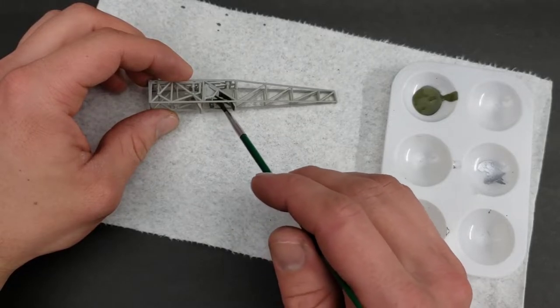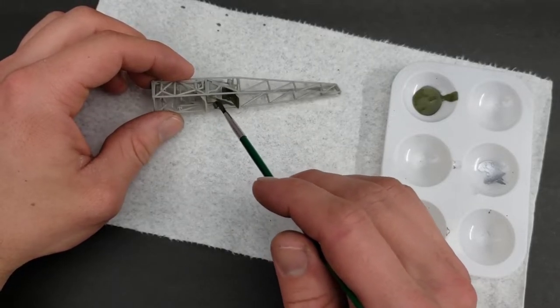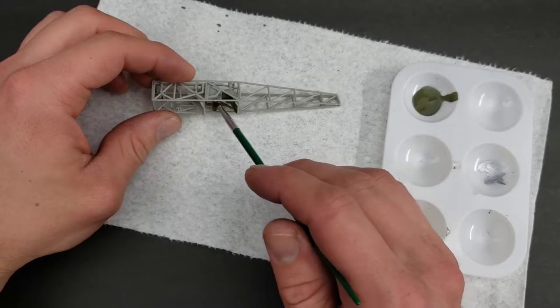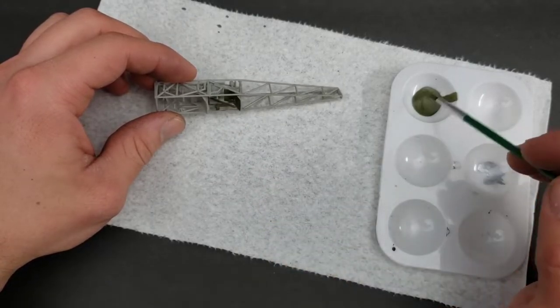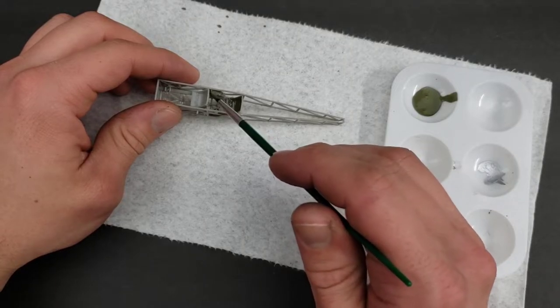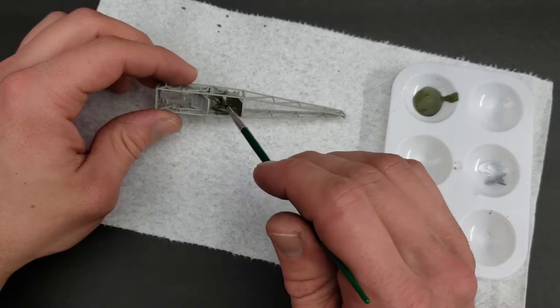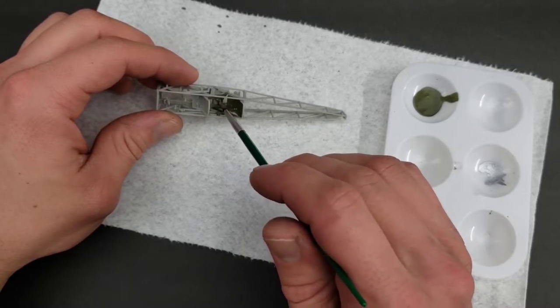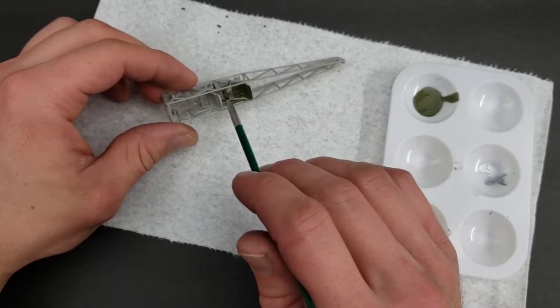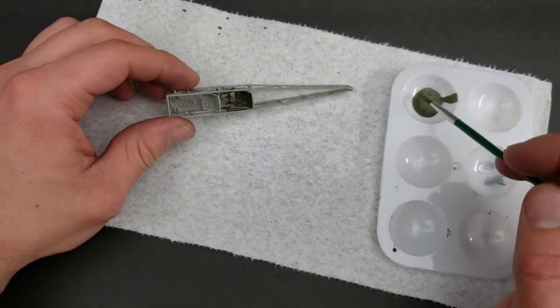I especially want to be careful with this because all models have lots of ridges and edges and stuff, and let's be honest, we don't want big paint globs on our model. We want to be pretty precise about how we're applying the paint.